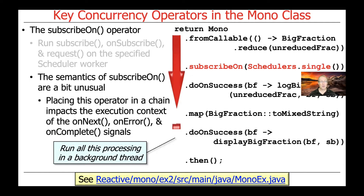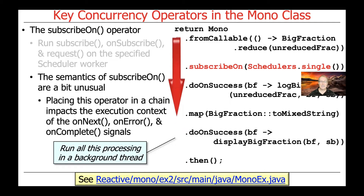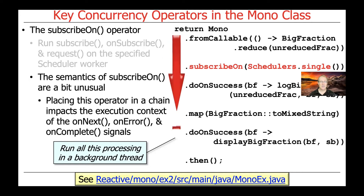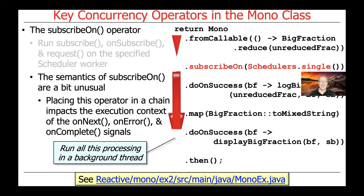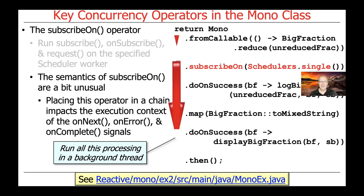The particular example that we're going to focus on later is in the link at the bottom of this slide. What happens if you place this operator in a chain — that being a chain of method calls used to work on a Mono — this will impact the execution context of the various onNext, onError, and onComplete signals or methods that are called as the event gets propagated through that chain.